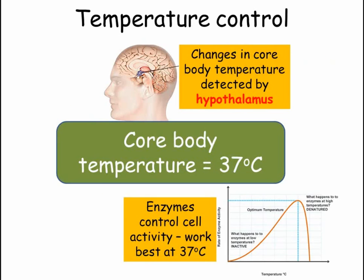Firstly, temperature. Enzymes are proteins that act as biological catalysts to speed up the chemical reactions taking place in cells. There's more information on enzymes in a separate video in the B2 unit. If these enzymes in humans are not working quickly enough, then the cell will stop functioning. This can happen if the temperature gets too cold or if it gets too hot. Normal body temperature is 37 degrees Celsius, and 2 degrees higher or lower than this can be dangerous.